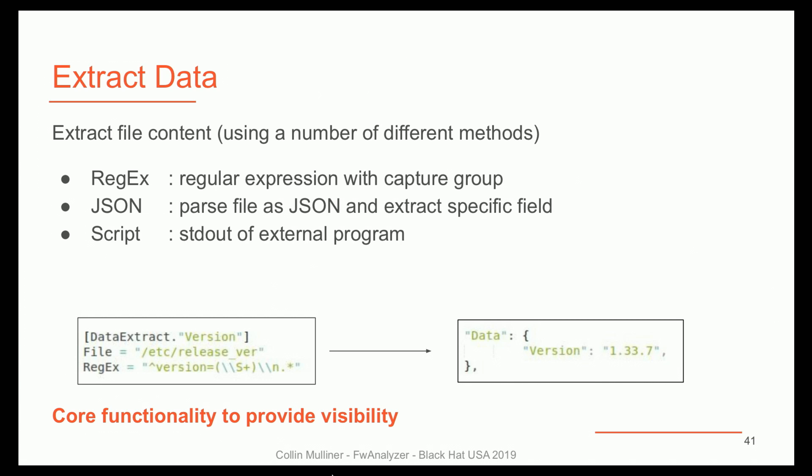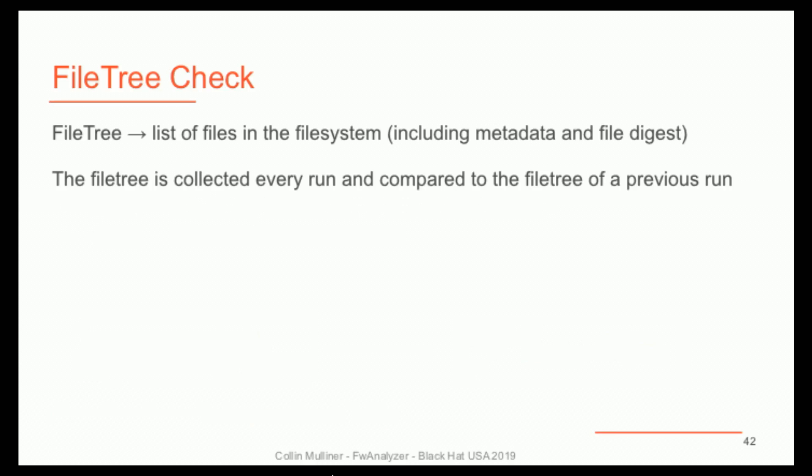The data extraction feature has almost the same functionality — you can have a regular expression with a capture group and say extract this part from this file. Again, natively read JSON, or run a script and use the output. You can say: get the version and put it into the data output as 'version.' In the end when you read the report, you actually see what the outputs of your checks are — what the version number or build type tells you. That's really easy for visibility.